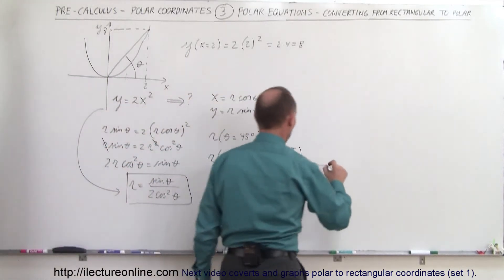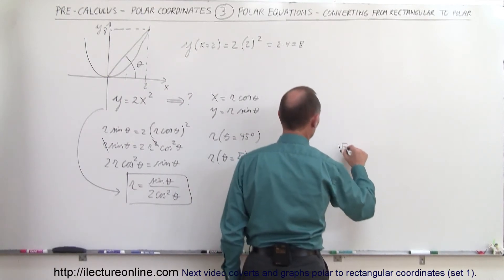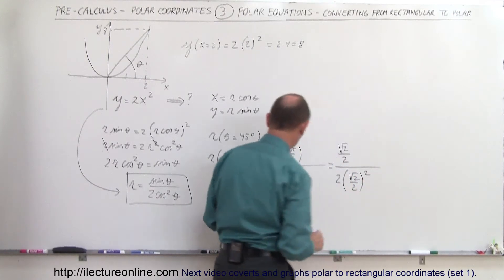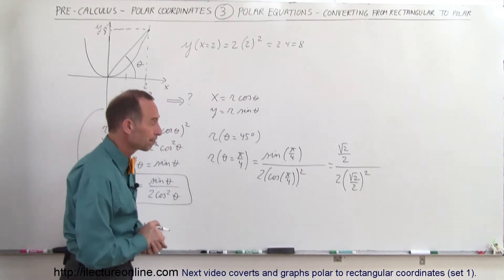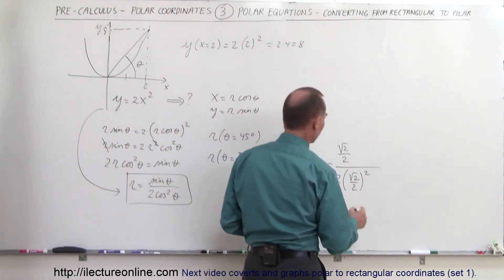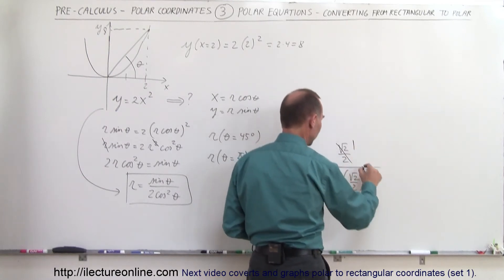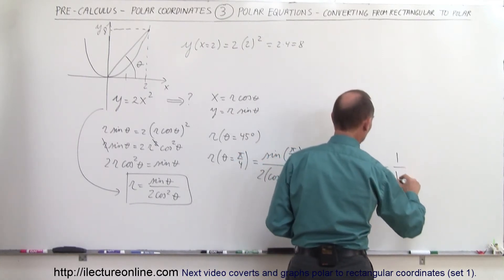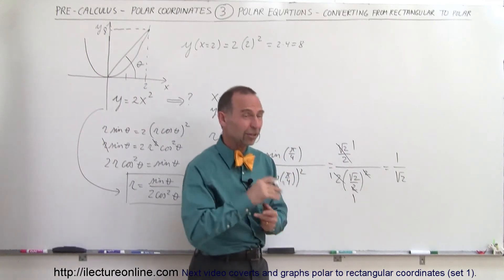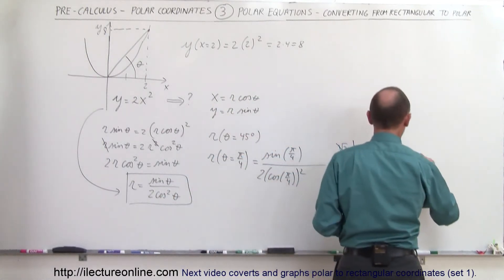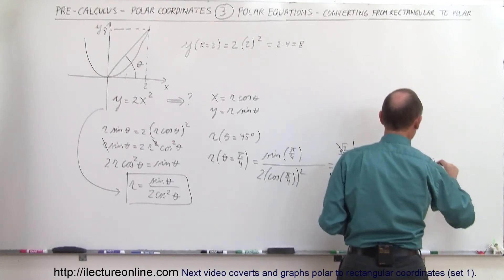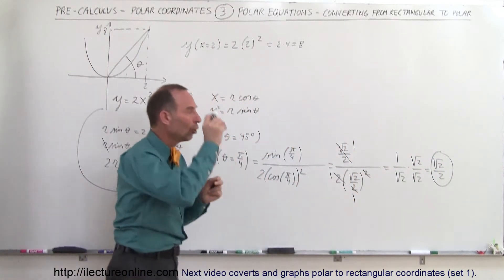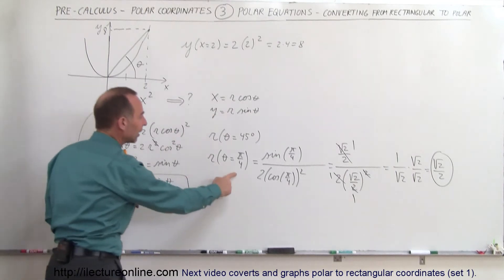Plugging in the values: the sine of pi over 4 is the square root of 2 over 2, divided by 2 times the quantity the square root of 2 over 2 squared, because the cosine of pi over 4 squared is indeed that. Simplifying: the squared terms cancel to give 1, and the 2 and 2 cancel, giving 1 over the square root of 2. Rationalizing the denominator by multiplying by the square root of 2 over the square root of 2 gives r equals the square root of 2 divided by 2. That is the distance from the origin to the point on the graph when the angle theta is pi over 4.